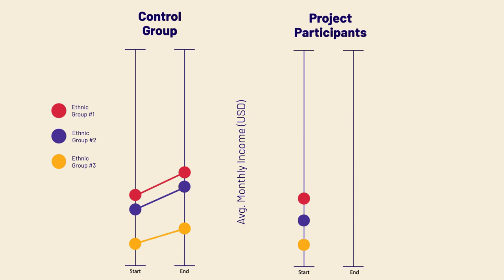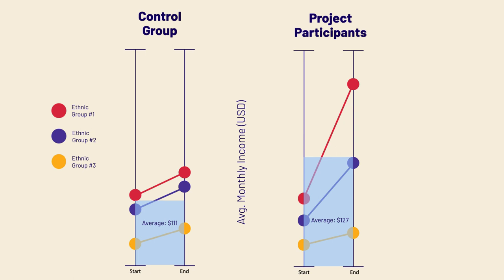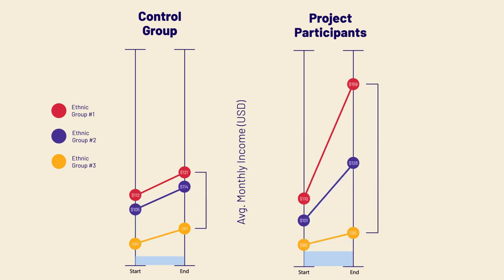And here's what it looks like for our project participants. Here, income also rose, but the amount of increase was quite different for different ethnic groups. If you remember from our previous charts, the average income did increase more overall for the project participants, but when we break it out through an equity lens, we see that the gap between the richest and poorest ethnic groups also grew.